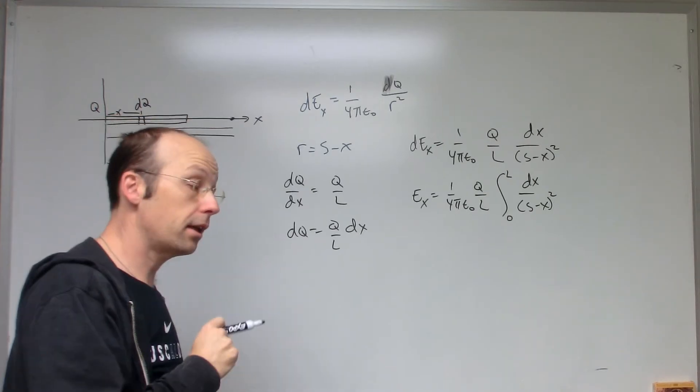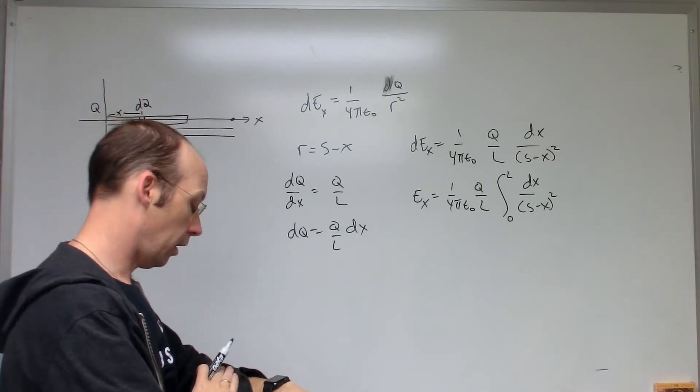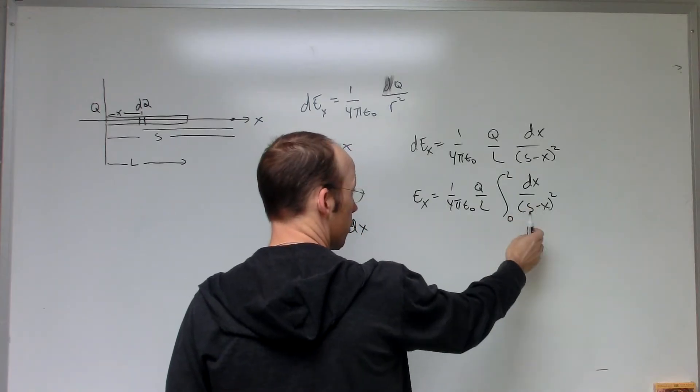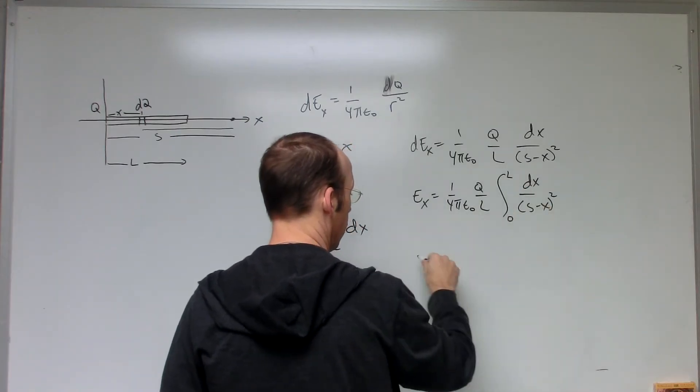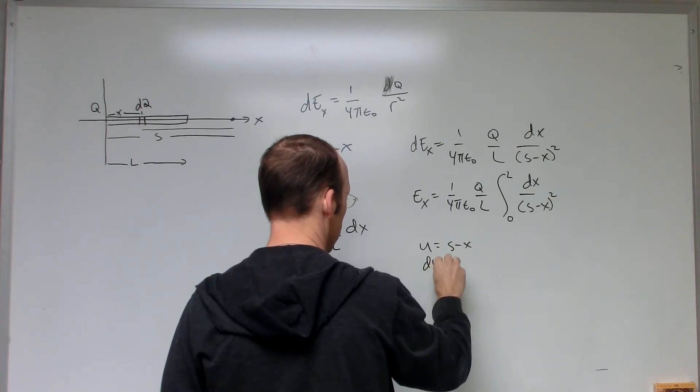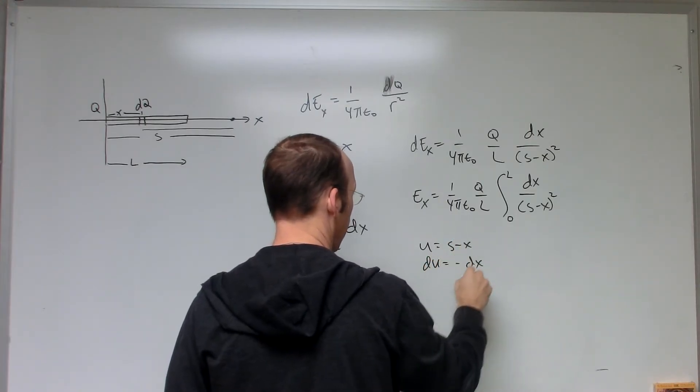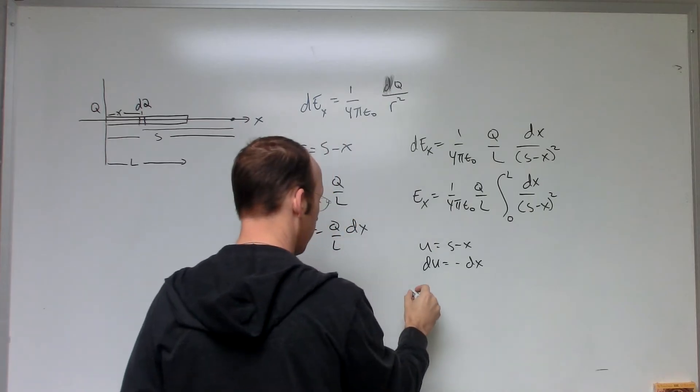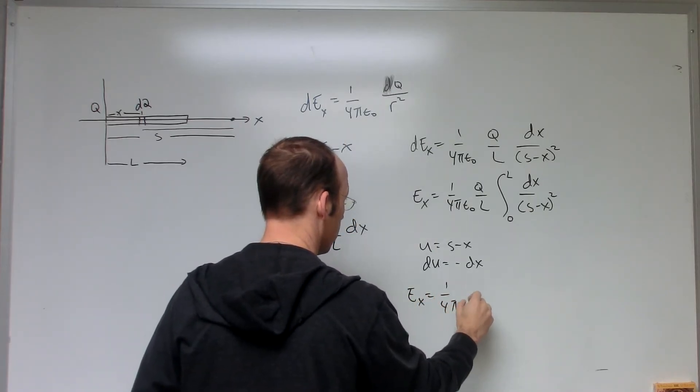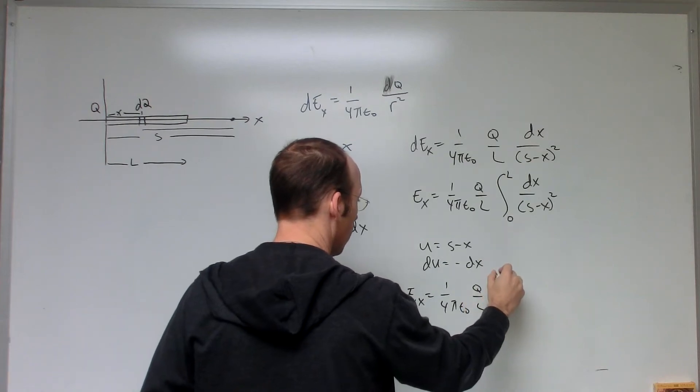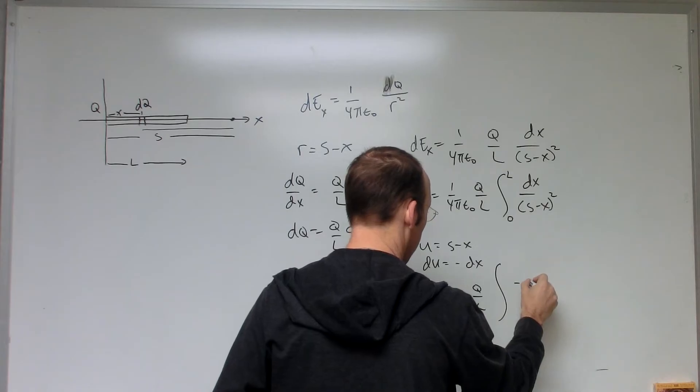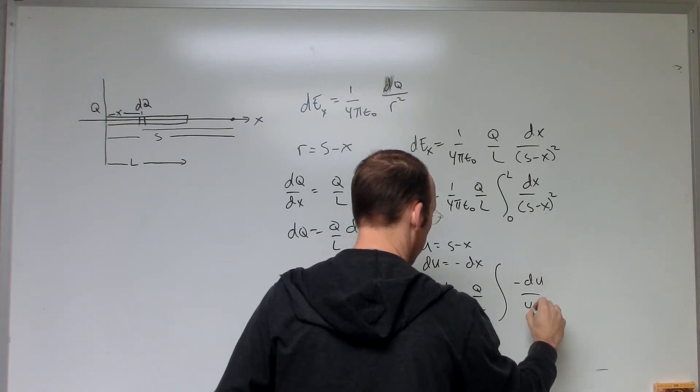Okay, this isn't a terrible integral. We can do it. So let's just say a U substitution. Since I have U and DU right there, I can say U equals S minus X. DU equals negative DX. So this integral becomes, I'll leave the limits off right now, negative DU over U squared.